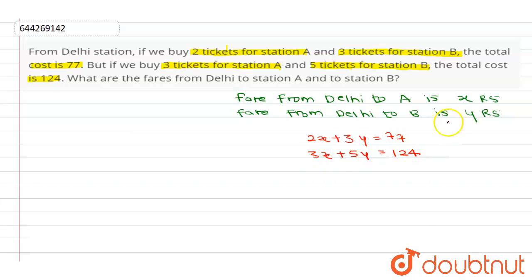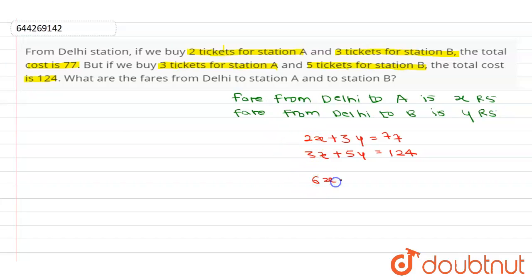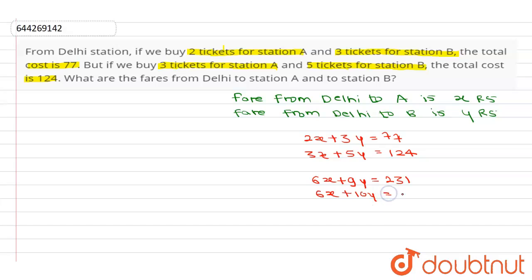Now we need to solve these equations to get the value of x and y. We multiply the first equation by 3 and the second equation by 2, so as to make the coefficient of x equal to 6 in both. Multiplying the first by 3: 6x + 9y = 231. Multiplying the second by 2: 6x + 10y = 248. Let us call these equation A and equation B.